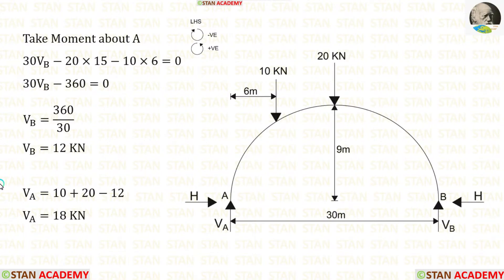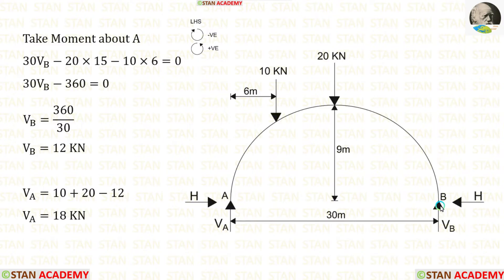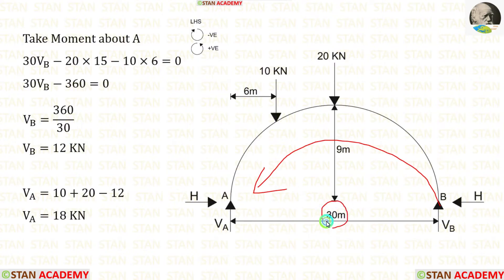Now let's calculate the vertical reactions. First, I am going to calculate the vertical reaction VB by taking moments about A. Moving towards the left-hand side, clockwise will be negative and anticlockwise will be positive. The vertical reaction VB is acting towards point A in the anticlockwise direction, so it will be positive and the distance is 30, giving us 30·VB.